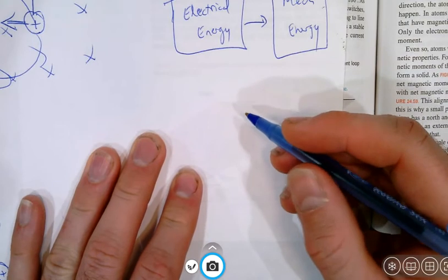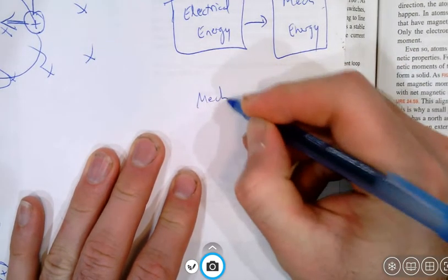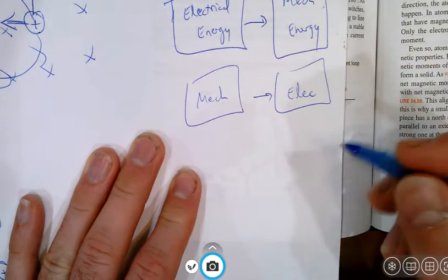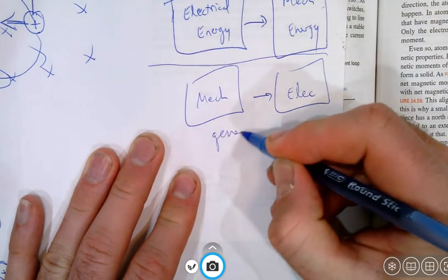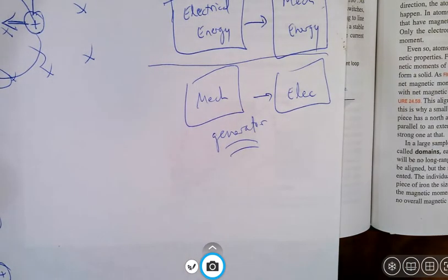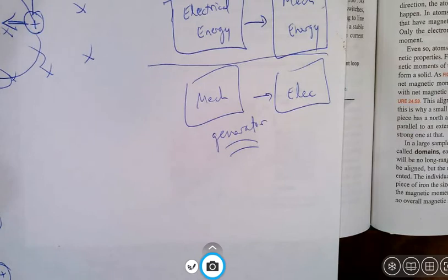One of the things we're going to look at with Faraday's Law is actually going the other way — from mechanical energy to electrical energy. This is called a generator. We're going to need to understand Faraday's Law to understand how a generator works — how cranking a wheel or having a hamster run in a wheel can actually charge up a battery.